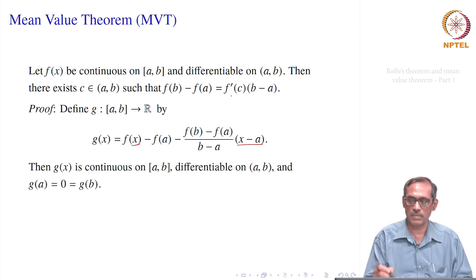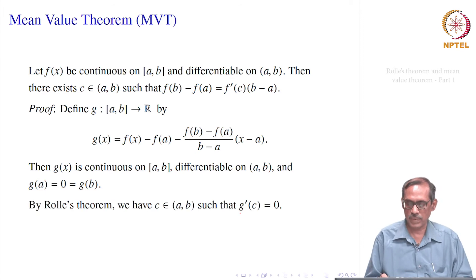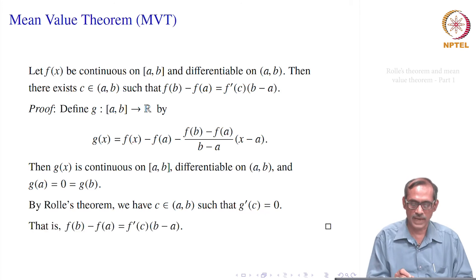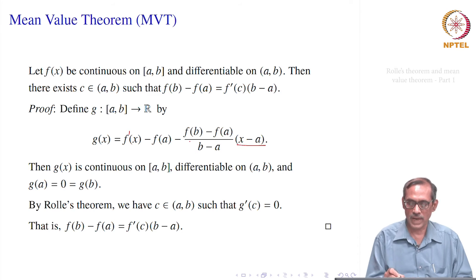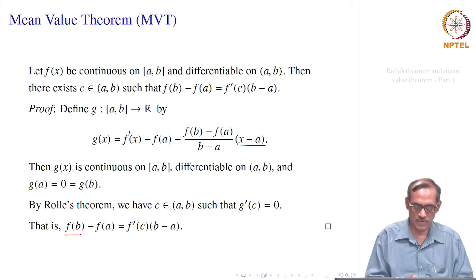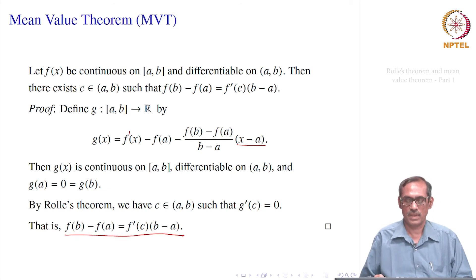We can apply Rolle's theorem to g, so there exists a point c such that g'(c) = 0. Now g'(c) = f'(c) − (f(b) − f(a)) / (b − a). Setting this to 0 gives f'(c) = (f(b) − f(a)) / (b − a), or equivalently f(b) − f(a) = f'(c) · (b − a). The proof is a direct application of Rolle's theorem.